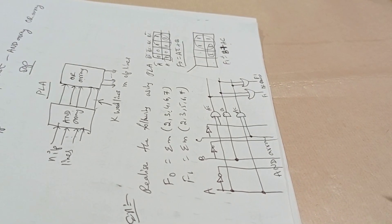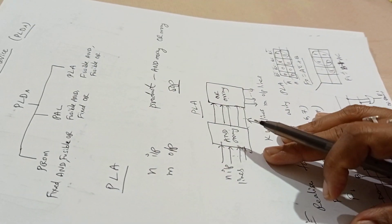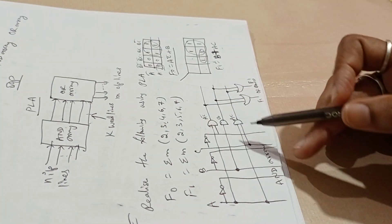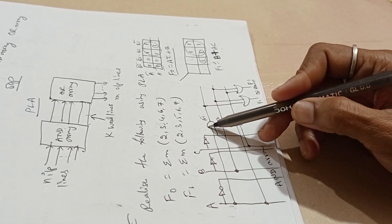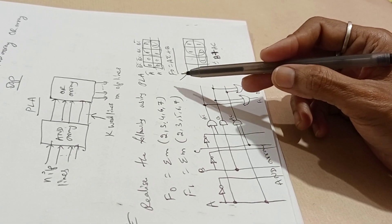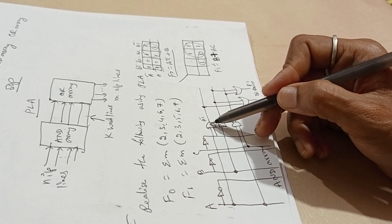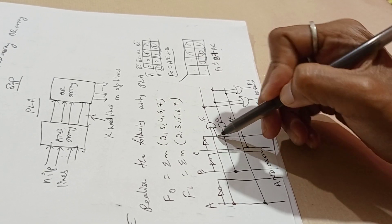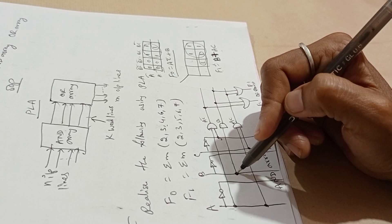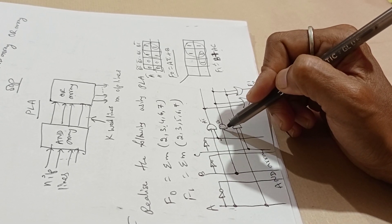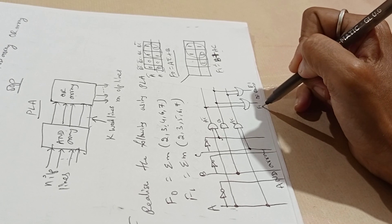Now we will design the programmable logic array. Here, programmable logic array means both are fusible, so we can design and change according to our requirement. These are the AND array, so connect the AND gates. First F0, that is AC bar. Make dot connections from A and C bar to the AND gate. One more connection from B to AND gate. Connect using dots to the OR gate. This becomes F0.